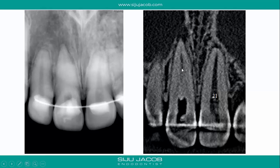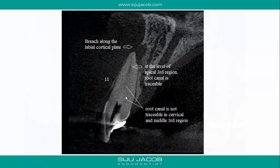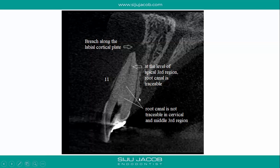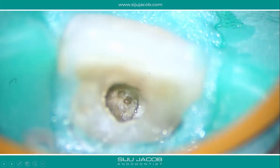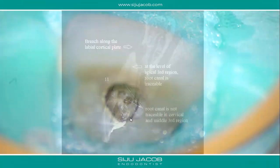The actual canal starts from that point onwards. In another view, you can again see that this portion is completely calcified. When we isolated the tooth and looked at it under the microscope, we can see a pretty bad calcification. There's a slight break labially, and you can see this whole mass of calcification even on the palatal side.